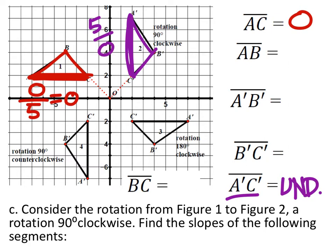A prime B prime, if this pattern continues, should be the opposite reciprocal. Let's check — we go down three and to the right two. That slope is negative three over two. Those two slopes are opposite reciprocals of each other, confirming the pattern.